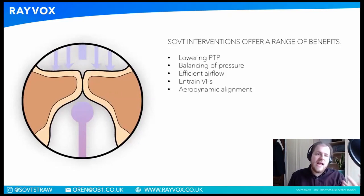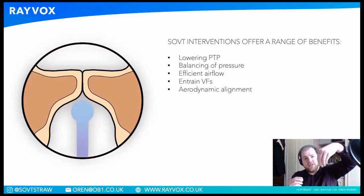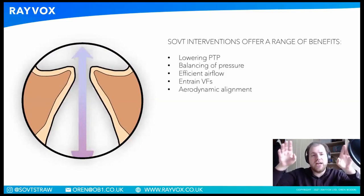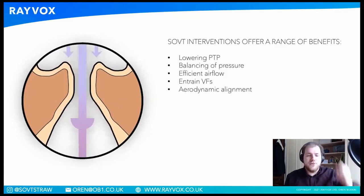They help with aerodynamic alignment, and you can kind of see this again from the animation. As air pressure is moving backwards down the vocal tract, we call it squaring. So we square the top of the vocal folds, shape them appropriately, and make them more aerodynamic for the air to interact and move through.